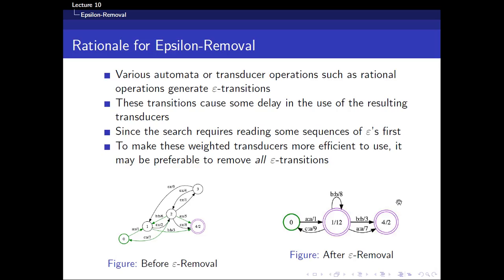But why do we even try to remove an Epsilon transition? Well, you realize that in order to use a transducer, most of the time it requires you to search through the entire transducer itself. You can think of it as your search space. If you have a lot of Epsilon transitions, it will create a lot of redundant paths. Imagine if you could take this and reduce to this — you take your original search space and augment it to such a small space, it's going to make the transducer more efficient to use. And that is why we do Epsilon Removal.